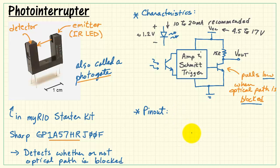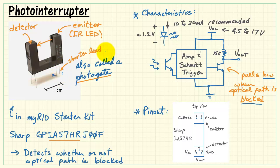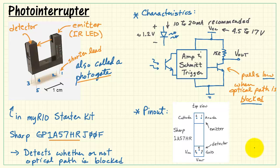Taking a look at the pinout for this device as viewed from the top, we have the anode and the cathode appearing on this side. Note that pin 1 is the shorter lead — that's the anode. The three leads on the other side are associated with power supply, ground, and output.